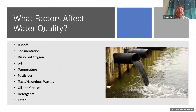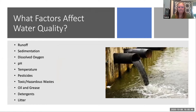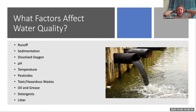So: runoff, sedimentation, dissolved oxygen, pH, temperature, and then pesticides, hazardous waste, oil, grease, and detergents. Pretty much everything from pesticides down — all of the chemicals you can find — but they're not really independent categories of each other because they tend to be grouped together, since a lot of them are forced into the water through runoff.